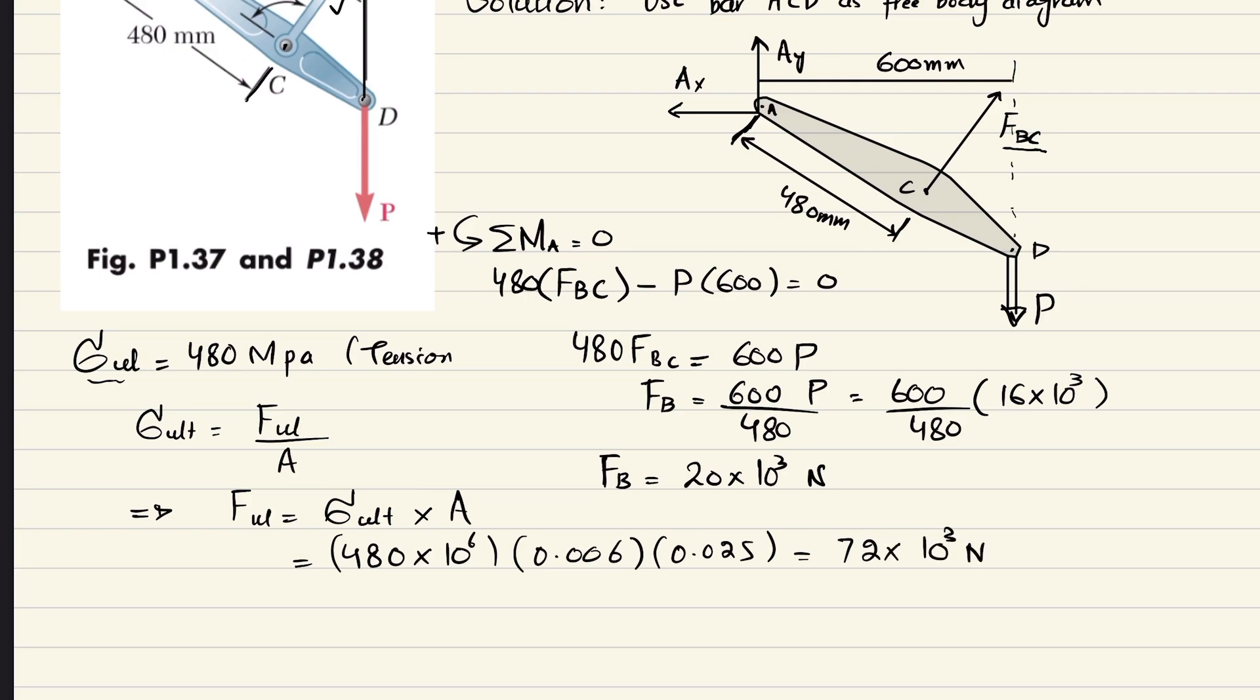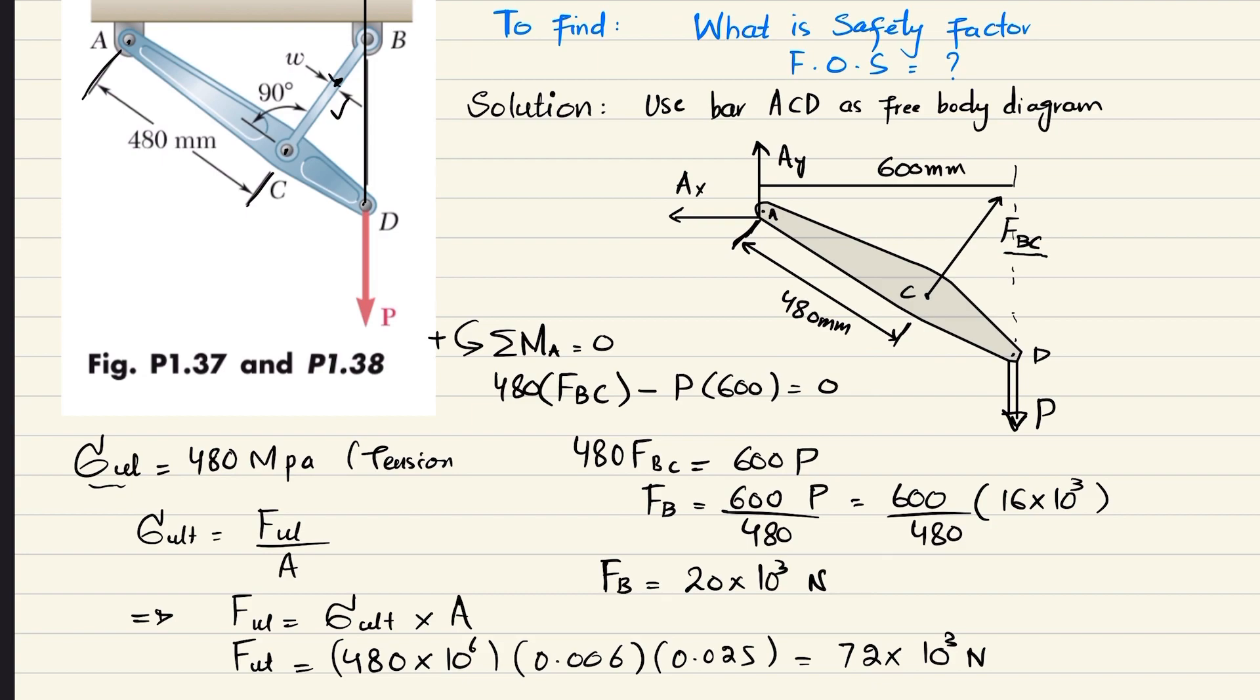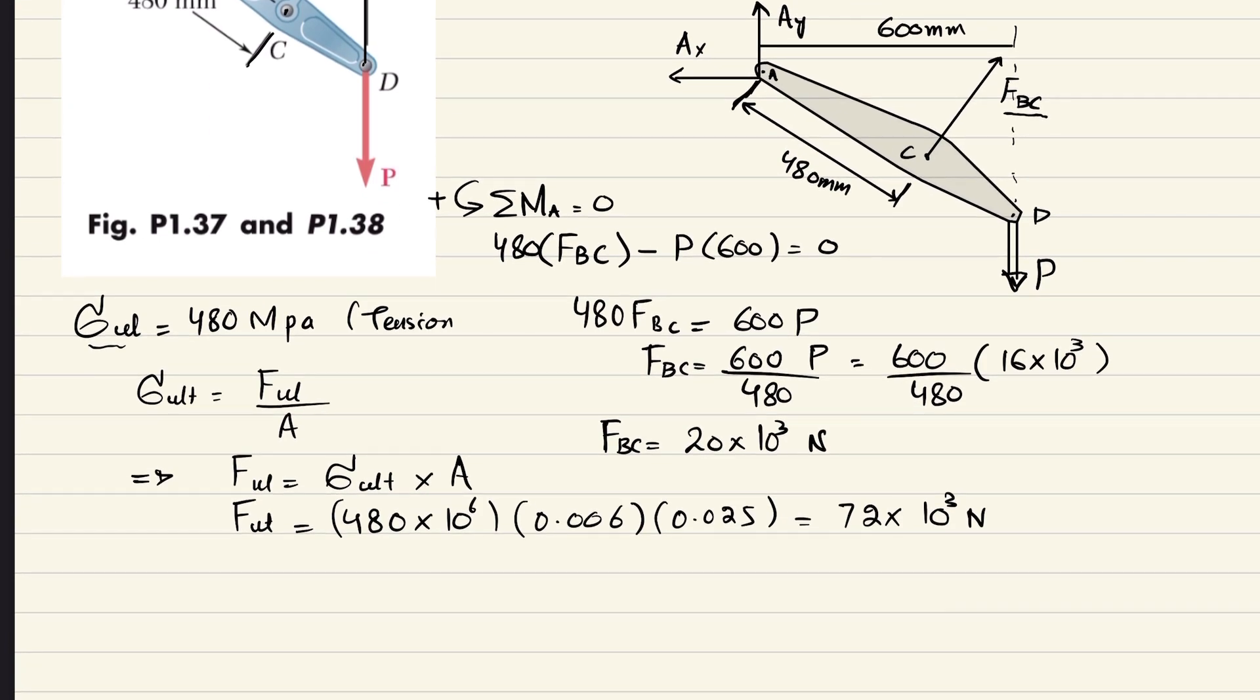Now F ultimate is the maximum force you can apply which will cause deformation in member BC. But our working load FBC is 20 kilonewton. So we will find the factor of safety. Factor of safety equals F ultimate divided by F normal, which is FBC in this case.